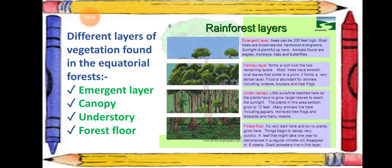The forest floor is the layer where sunlight does not reach at all — it is very dark here. Plants don't thrive in this layer. Things begin to decay very quickly; leaves that would normally take one year to decompose will decompose within weeks in the evergreen rainforest. Giant anteaters live in this layer.